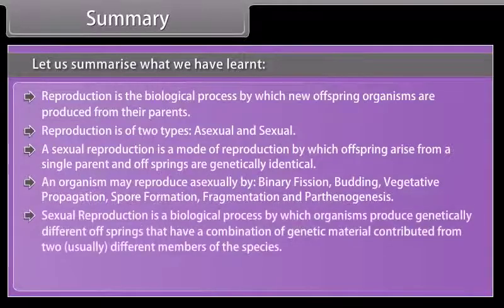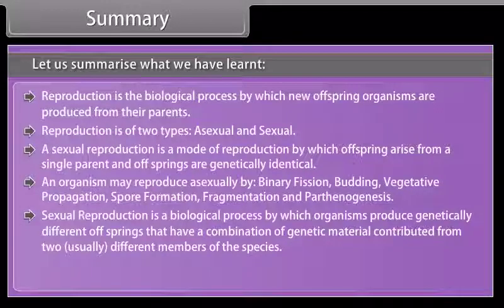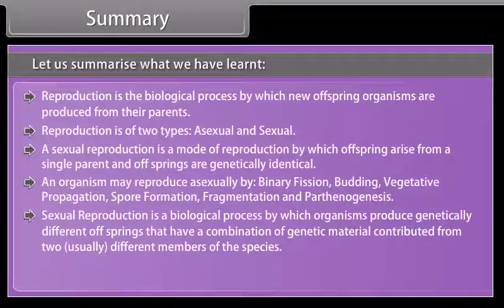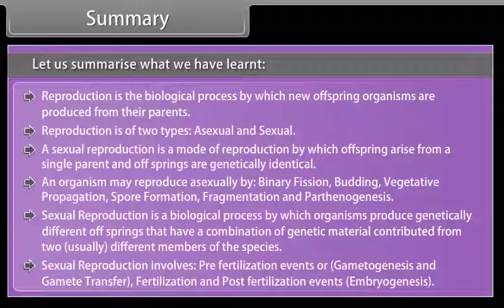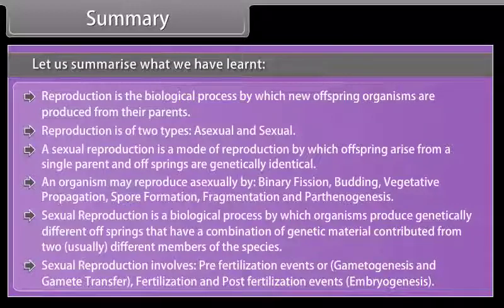Sexual reproduction is a biological process by which organisms produce genetically different offspring that have a combination of genetic material contributed from two usually different members of the species. Sexual reproduction involves pre-fertilization events — gametogenesis and gamete transfer — fertilization, and post-fertilization events including embryogenesis.